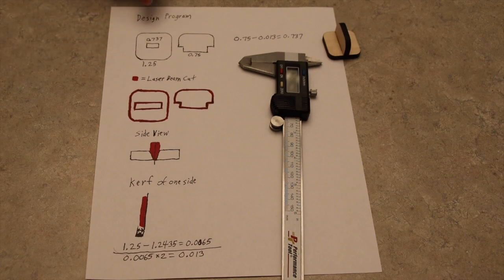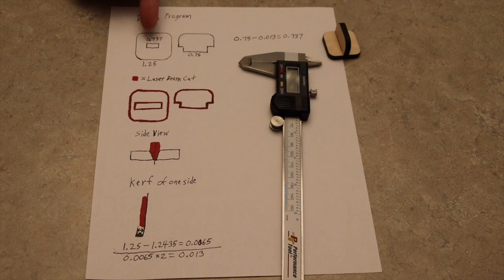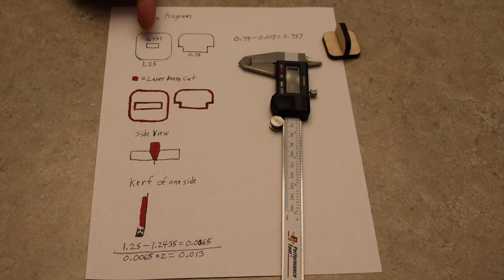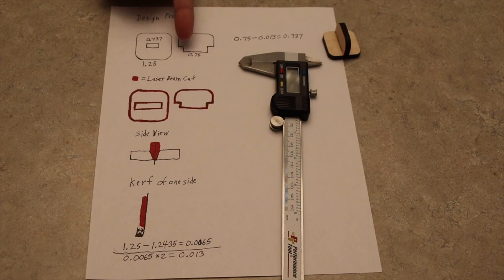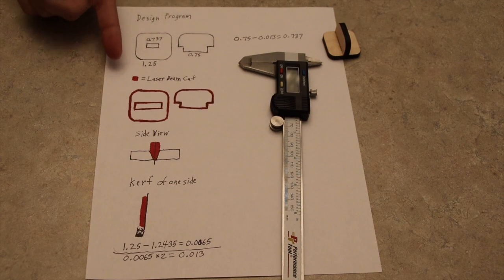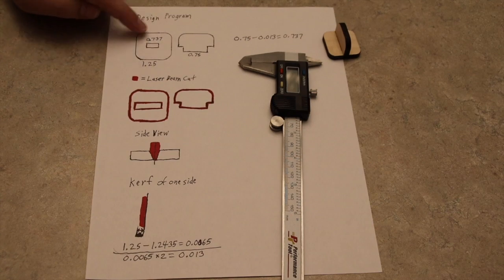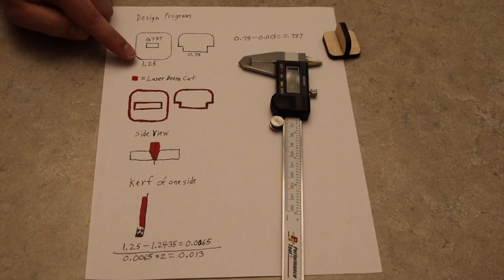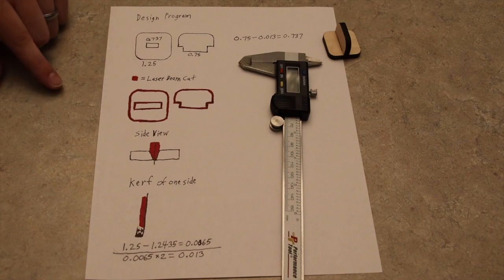As you can see, I made this design. The inside slot here is going to be 0.737, adjusted for kerf. The piece that's going to be going inside that is 0.75 inches, and then the outside piece all the way around on each edge is 1.25 inches. I'll get to why that's important here in just a second.